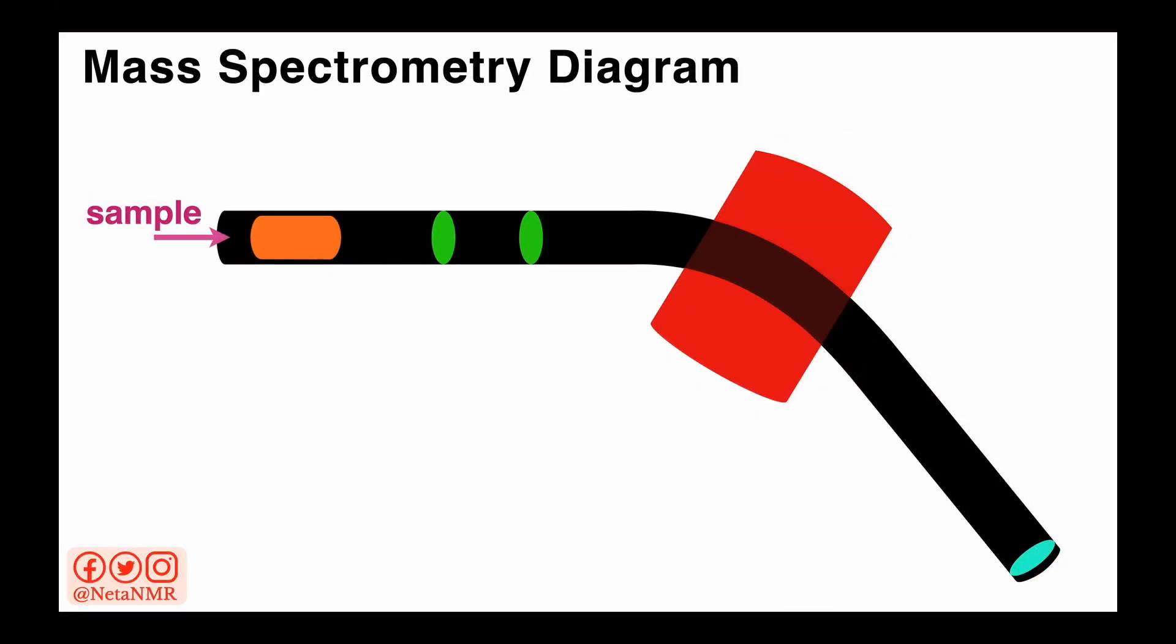First, we introduce the sample in the mass spectrometer. Then, we heat up the sample to vaporize it so the sample would be in gas form. Then, we ionize the sample, either by bombarding it with electrons, or using chemical ionization, or other methods to remove electrons from the atoms.